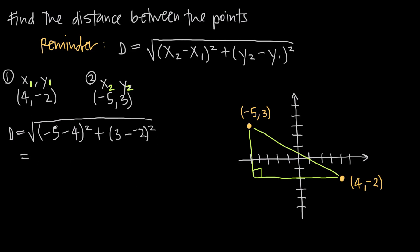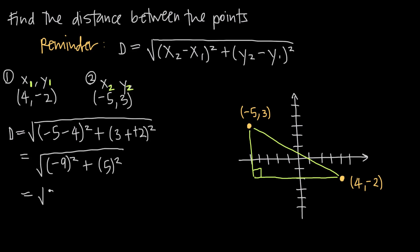Now we simplify. Negative 5 minus 4 is negative 9, so we have negative 9 squared. Then 3 minus negative 2 — those both become positive — so we get 3 plus 2 equals 5, giving us plus 5 squared. Squaring both: negative 9 squared gives positive 81, and 5 squared gives positive 25. 81 plus 25 is 106, so we get the square root of 106. Since no perfect squares factor into 106, this is our final answer: the distance between (4, negative 2) and (negative 5, 3) is the square root of 106.